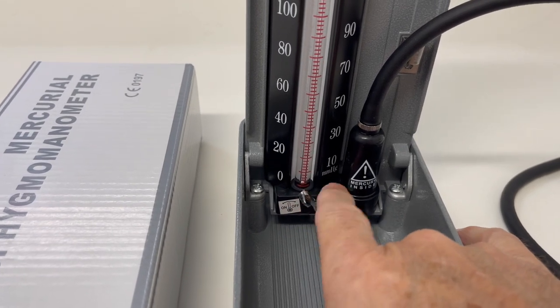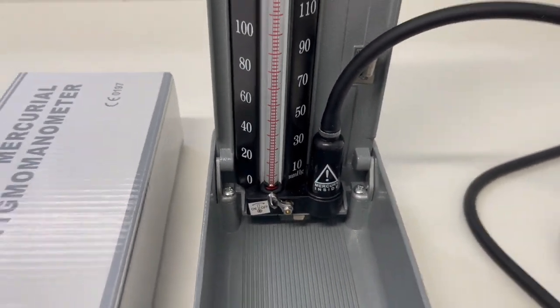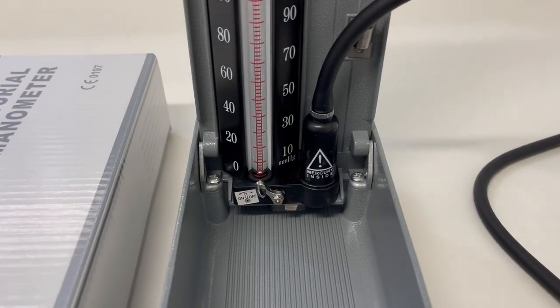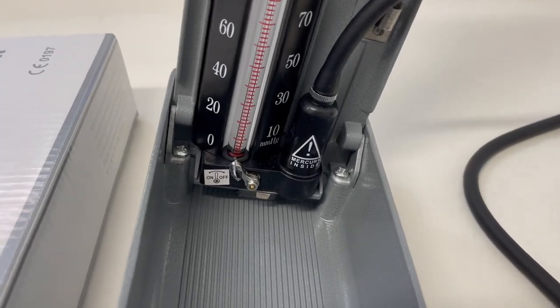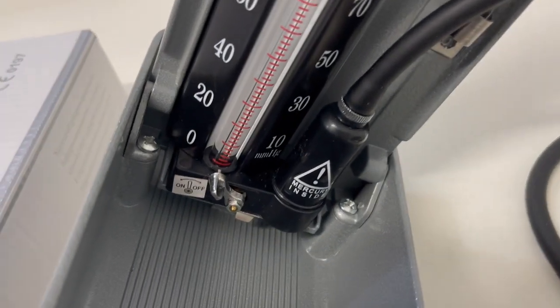You leave this tap open, you turn the whole device over to the right. You'll see the mercury will drop below the zero and you won't see it at all.